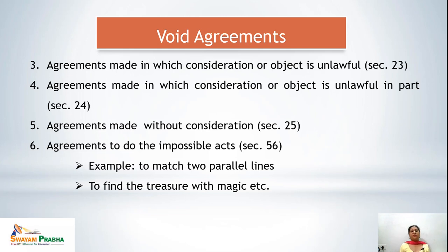For example, if Mr. A works for Mr. B, who has two types of business — one lawful and one unlawful — and Mr. A is working for both and receiving a salary, the salary cannot be differentiated for lawful and unlawful activities. Here the salary covers the whole business of B. So if B does not pay A, Mr. A cannot sue for the salary, because the consideration or object included in the contract is unlawful.